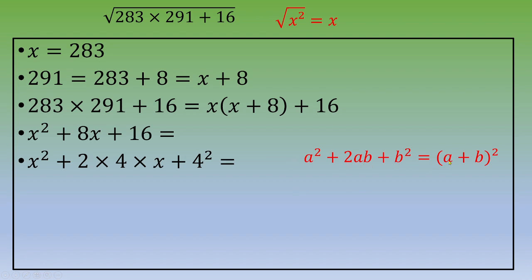Now, the quantity below the root is (x plus 4) squared.